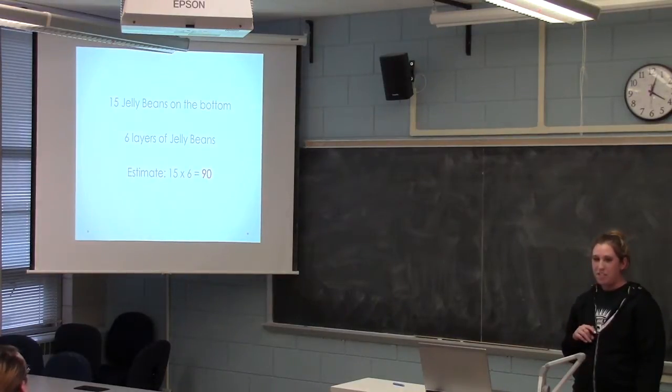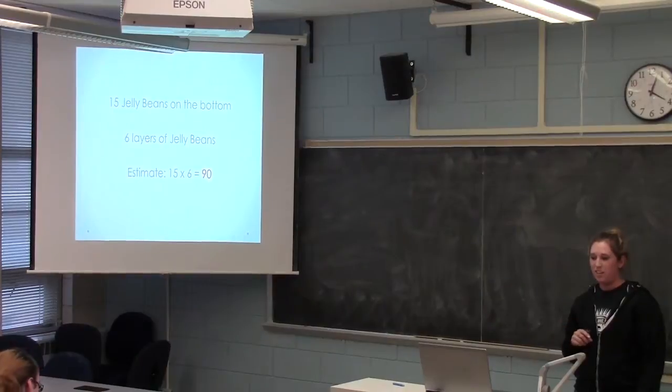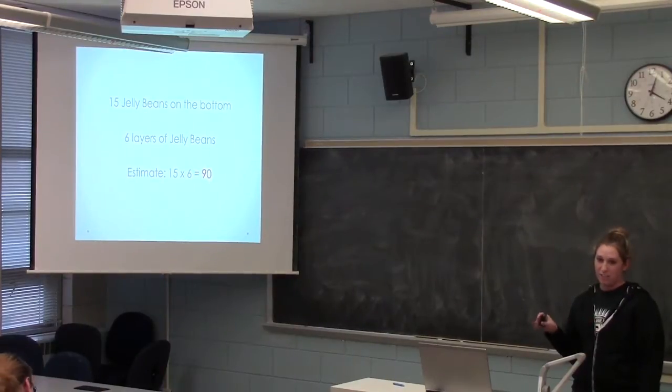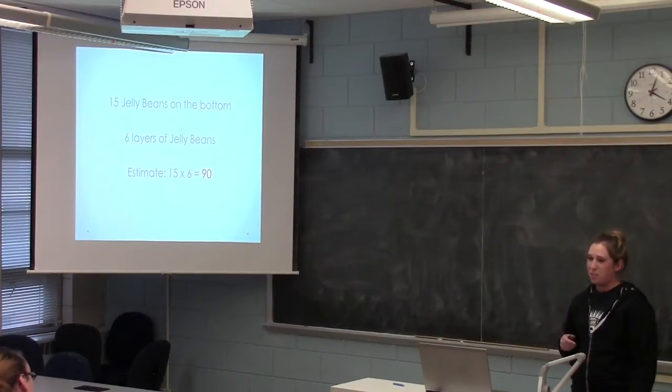So then you have 15 jelly beans on the bottom, and then 6 layers of jelly beans. So if you take 15 times 6 gives you 90. So you're estimating maybe about 90 jelly beans in that jar.